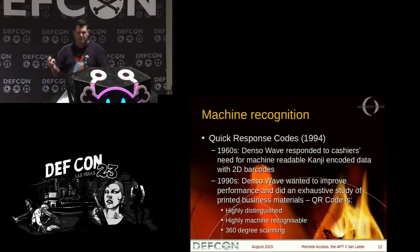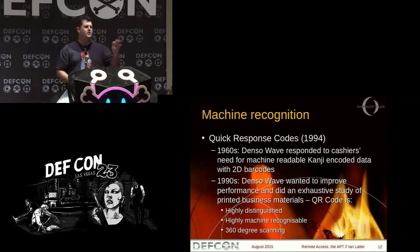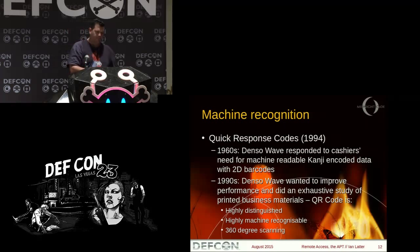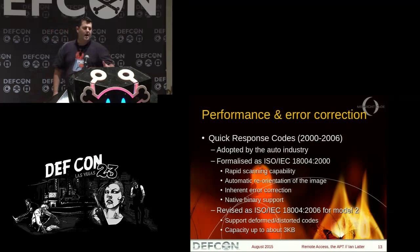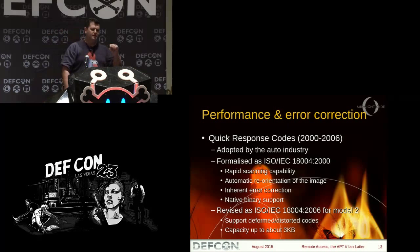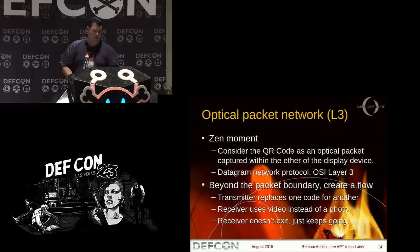In 1994 we had QR codes. The features I want to take from this are the highly distinguished codes, the fact that they're easily and machine-recognizable, and 360-degree scanning — I don't have to line them up. Quick response codes were formalized in 2000 and now support rapid scanning capability, automatic reorientation of the image, inherent error correction, and native binary support. They later supported deformed and distorted codes, with large capacities — but you'll see in this demo that we don't need the larger capacities.